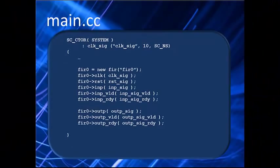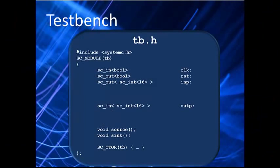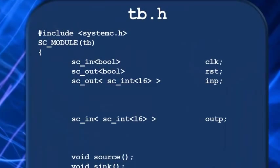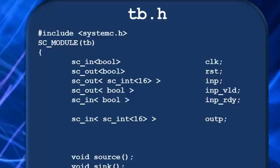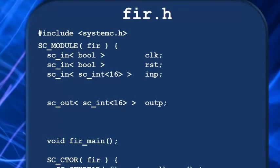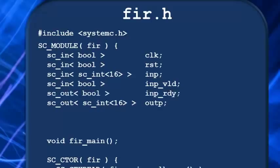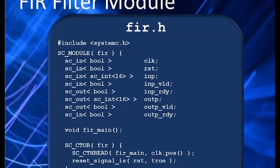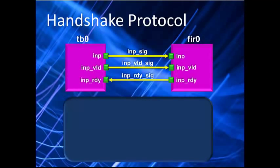Now let's jump inside the modules and add the pins we need. In the tb.h file for the input handshake we have two new pins: an output called INP_valid and an input called INP_ready, with corresponding sc_out and sc_in port declarations. For the output handshake we have a new input pin called OUTP_valid and a new output pin called OUTP_ready. In the FUR module in FUR.h the pins are just the other way around: INP_valid is an input, INP_ready is an output, OUTP_valid is an output, and OUTP_ready is an input.